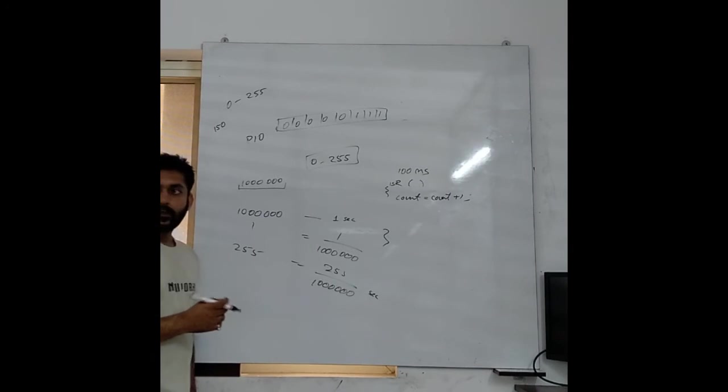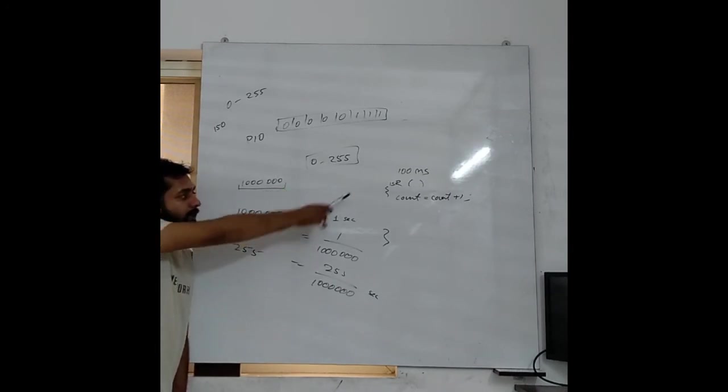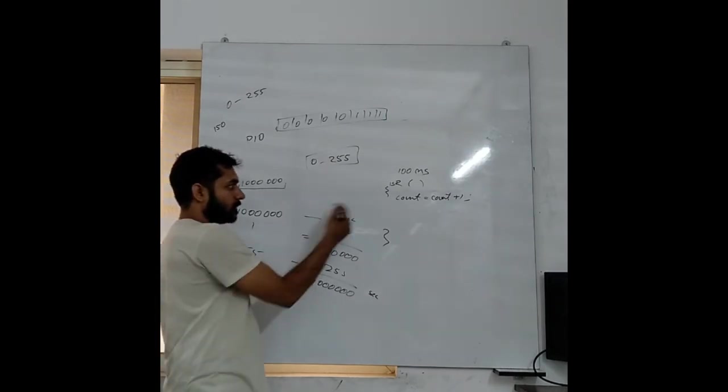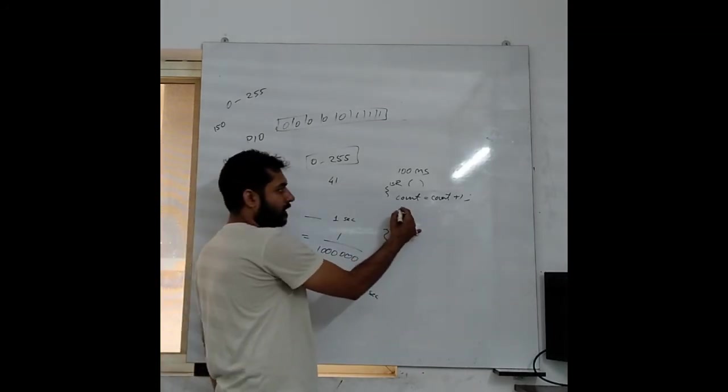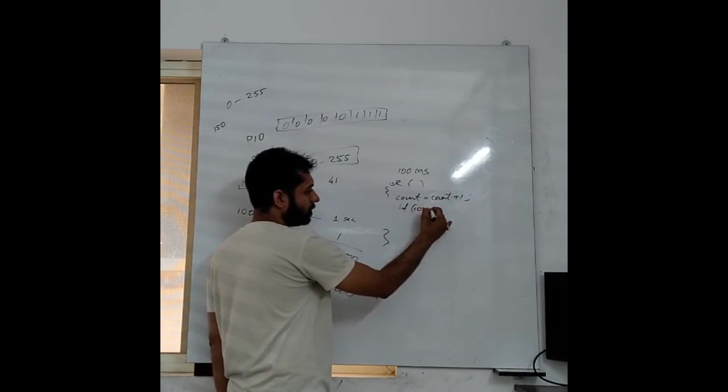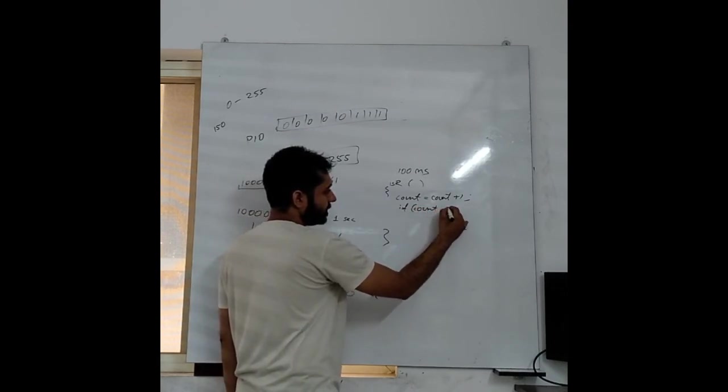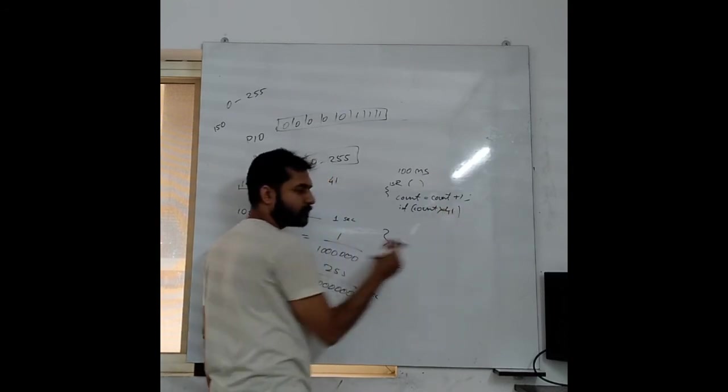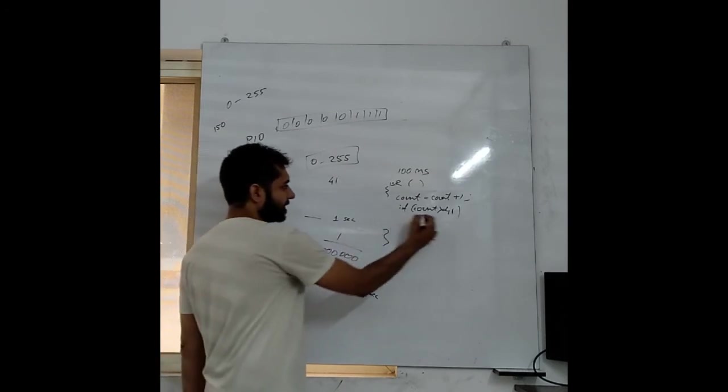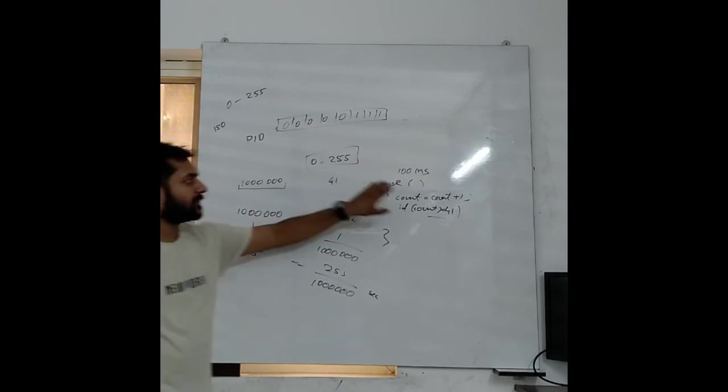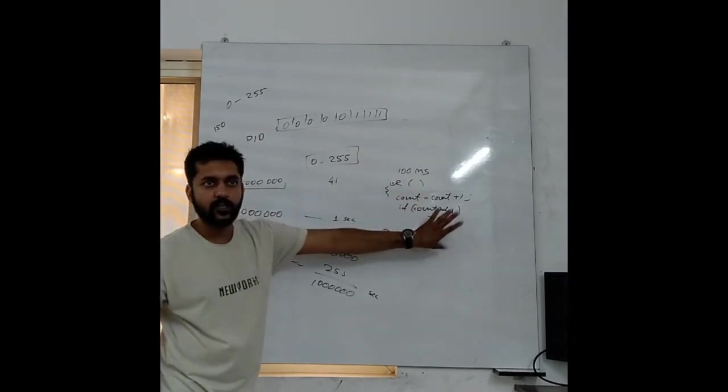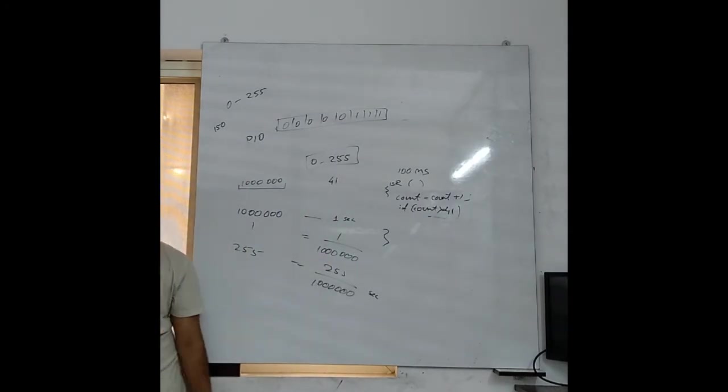So now I know, whenever 255 comes, I am jumping there. So let's say to count 1 second, I need 41 steps. 41 times the count should reach 255. So here if I count till 41, I will say if count greater than equal to 41, that means 1 second has passed. And then I can set some flag and do something. So when I set every 255, I will enter here, I will increment count. As soon as count becomes 41, I will say 1 second has passed. That is how I am measuring time using timers.